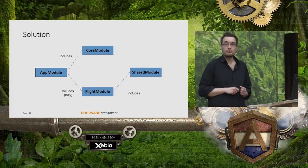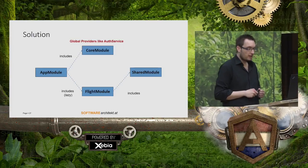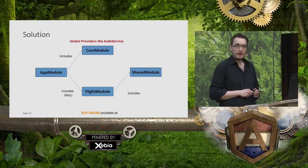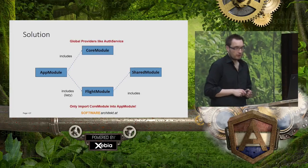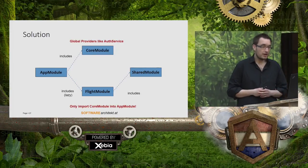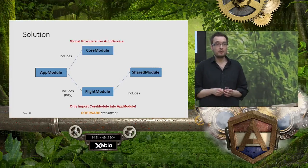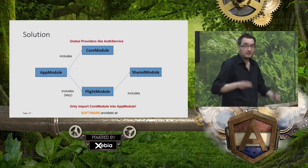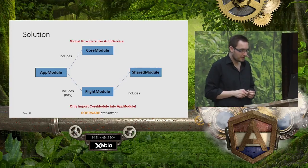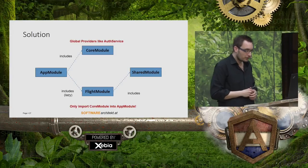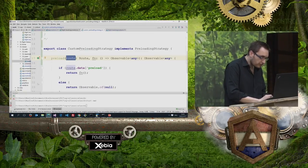The good thing is that when a service can't be found within a DI scope, it's looked up in the scope above — the global scope. So we need to get rid of the AuthService within the lazy module's scope. The Angular documentation proposes introducing a CoreModule that holds all global services and is only imported into the AppModule, ensuring just one singleton instance.